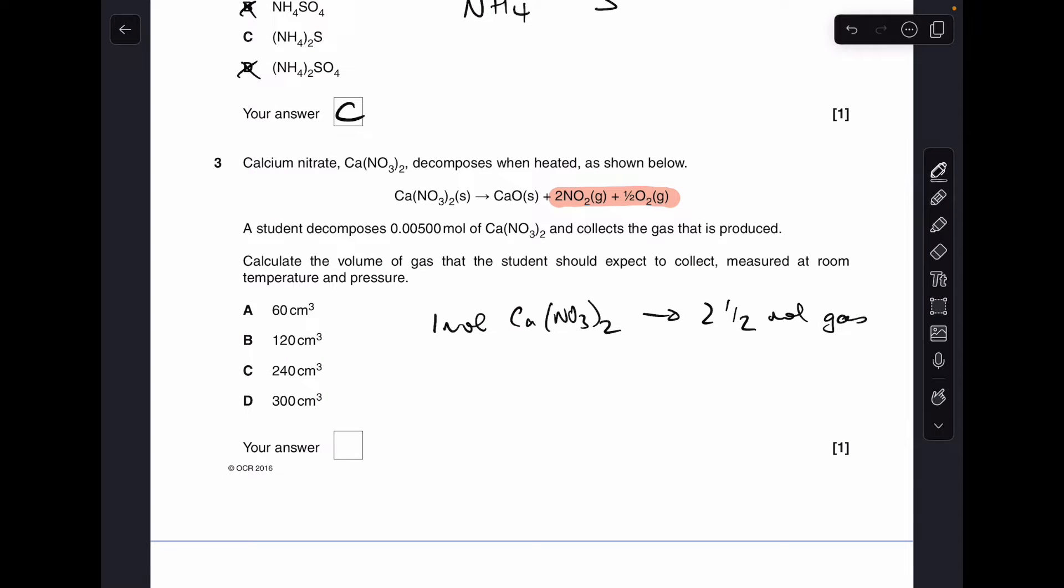And number 3. We've got to be careful here because it actually asks us to calculate the volume of gas. It doesn't specify which gas. So you can see from the ratio 1 mole of calcium nitrate actually generates 2.5 moles of gas. So if you've got 0.005 moles of calcium nitrate you're going to get 2.5 times that in gas. So 0.0125. And then you can see all the volumes are in CM cubed in the options. So I'll multiply it by 24,000 which will put it into centimeters cubed and you get 300. So the answer was D.